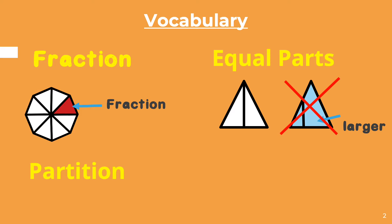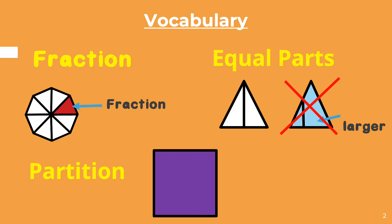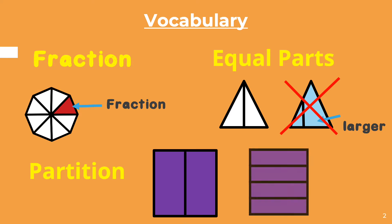For example, in this square, to partition it, I will add a line in the middle and make sure that each side is equal. This is another example of a square partitioned into four equal parts.